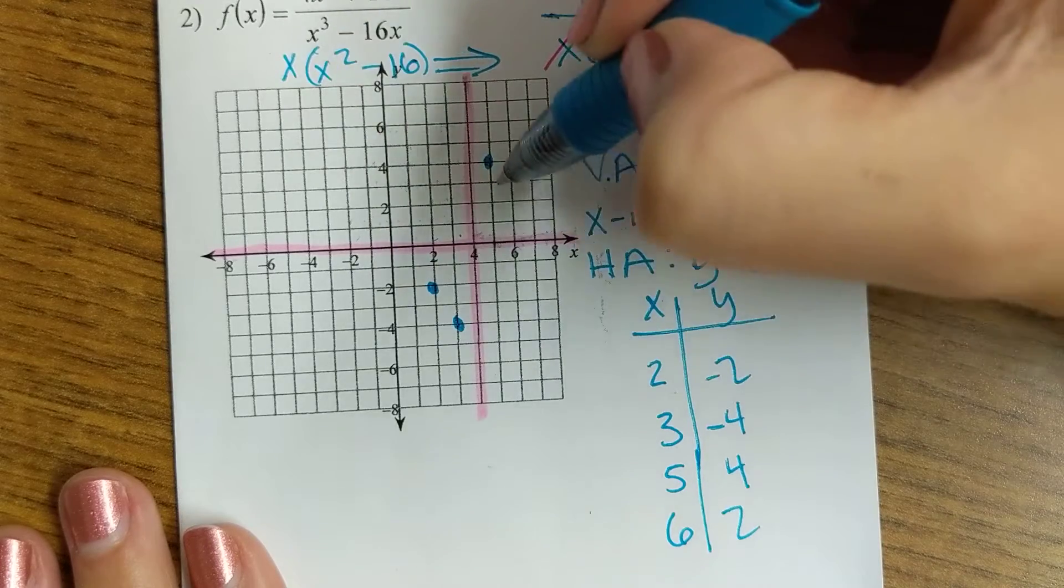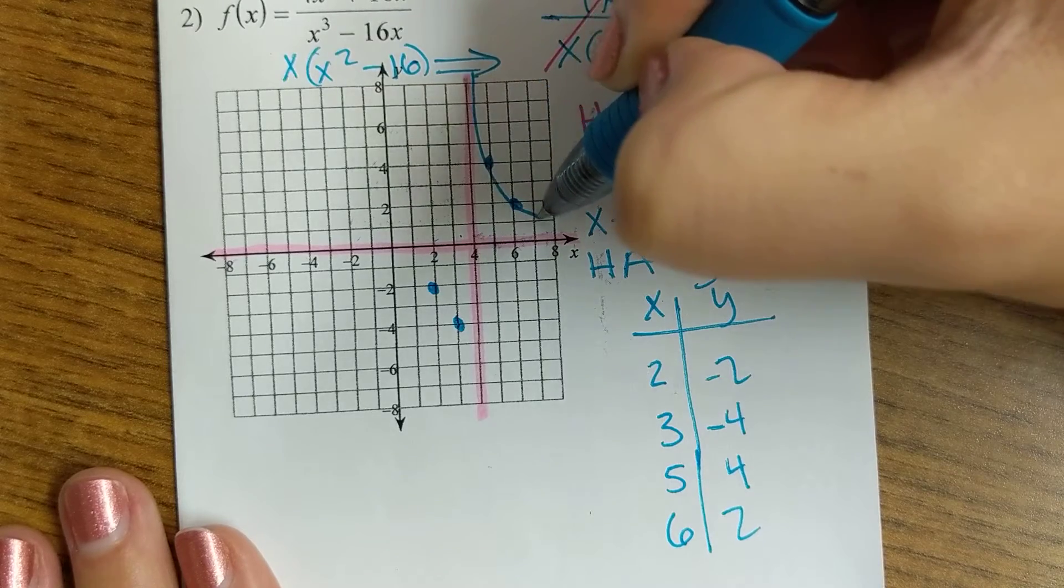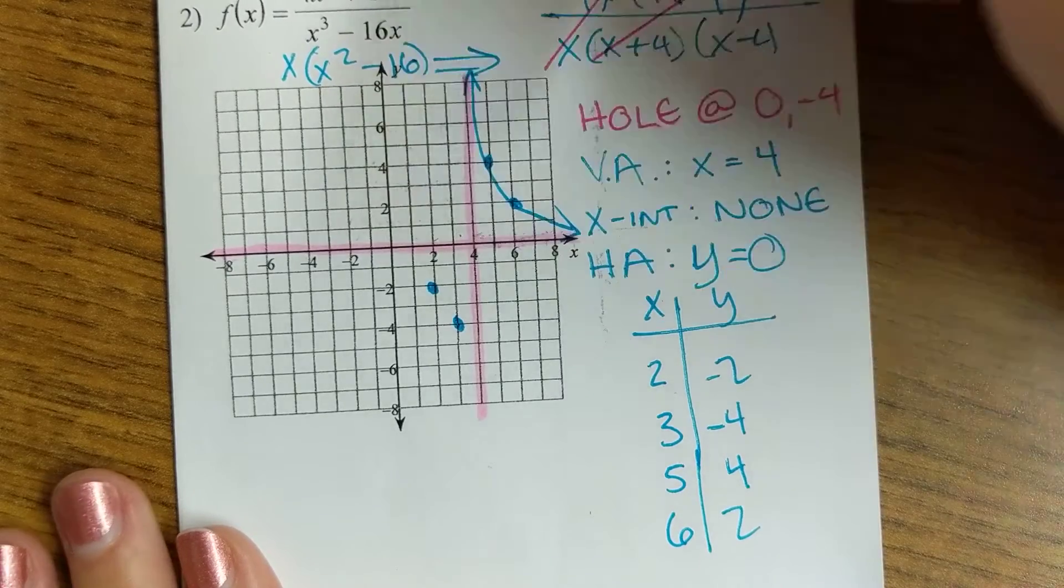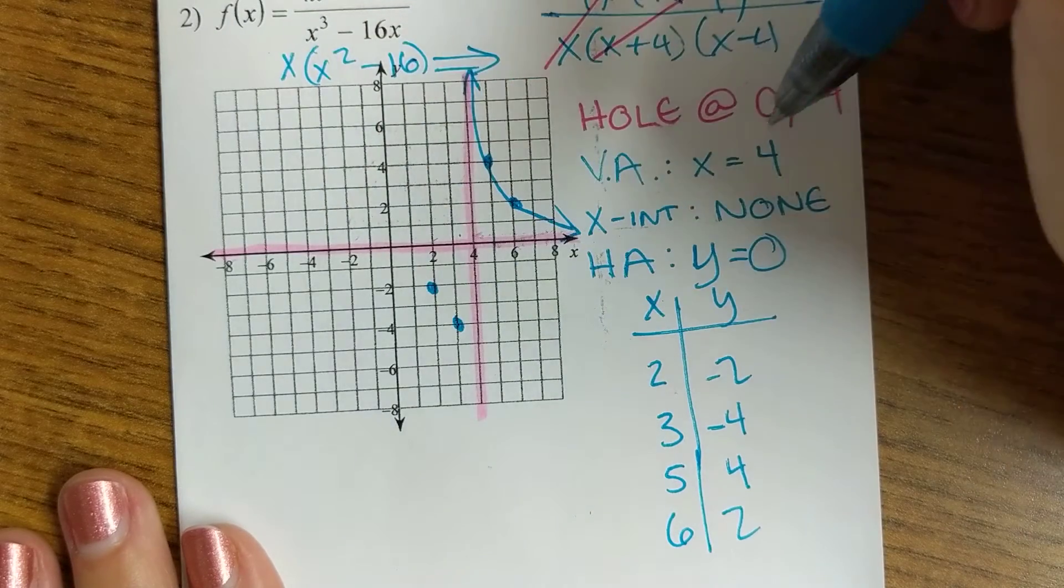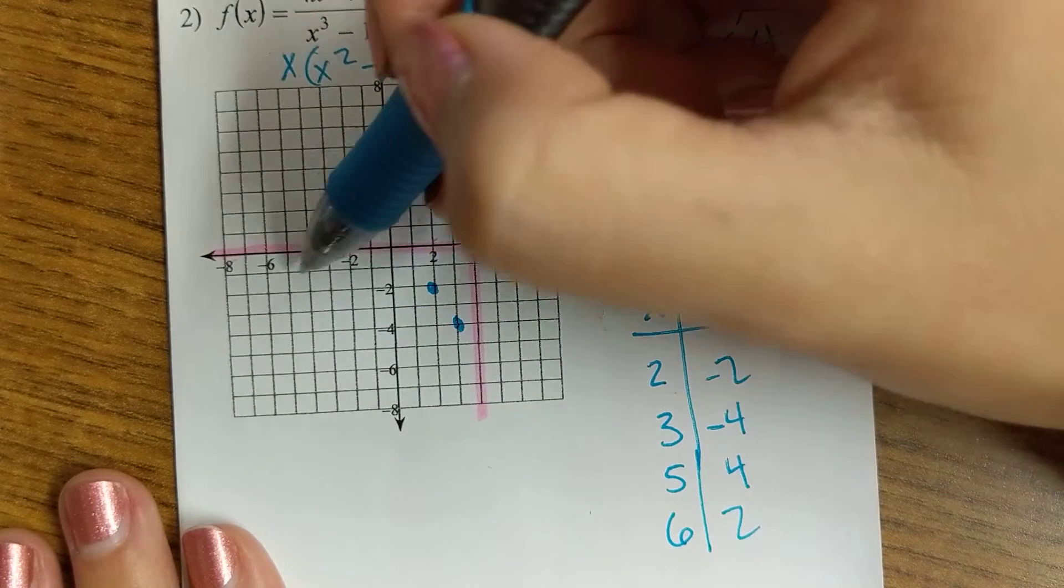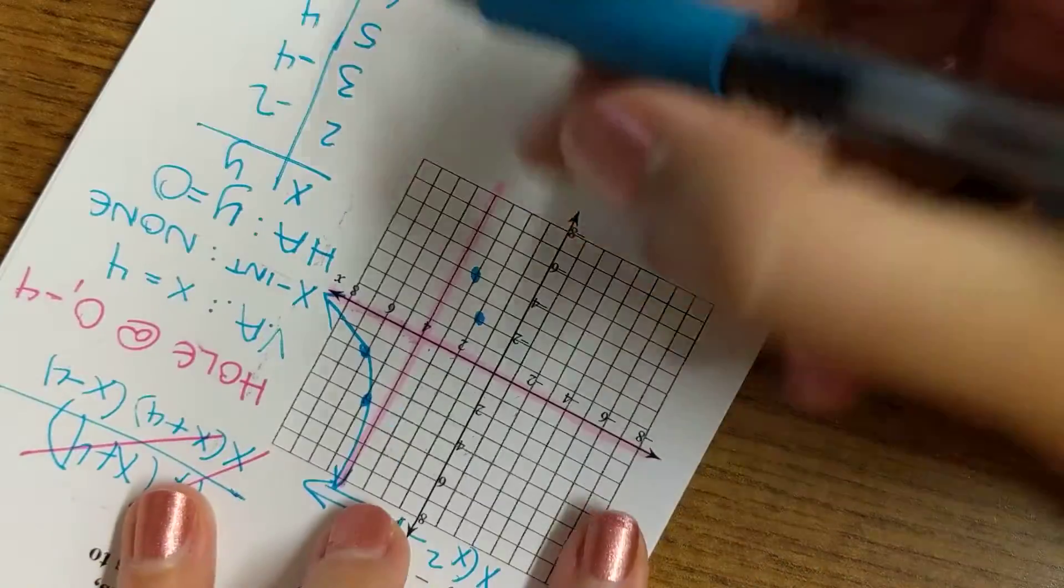As you can see, they are a reflection of each other. Okay, so this is going to be how this branch looks. Now, you've got to watch out for the holes. I know there is a hole at 0 and at negative 4, so I'm just going to watch out for those. I'm graphing it.